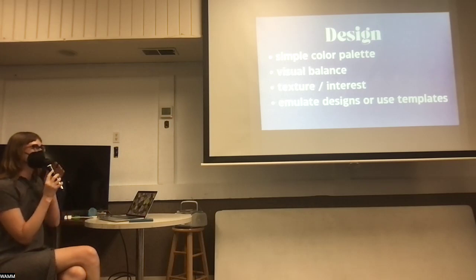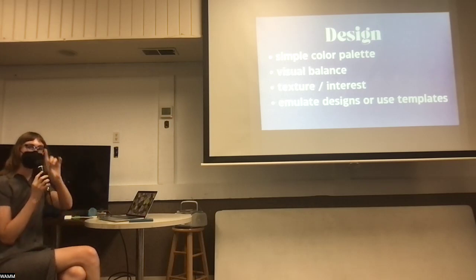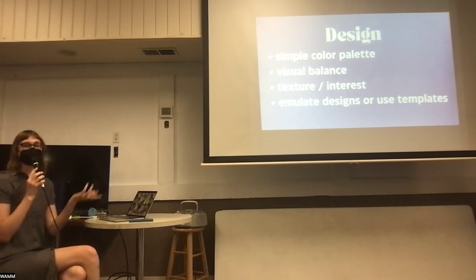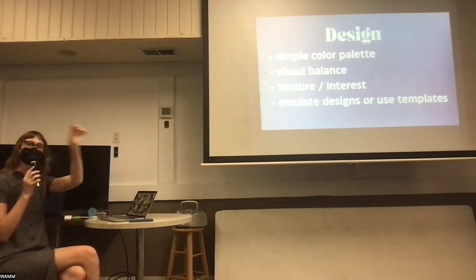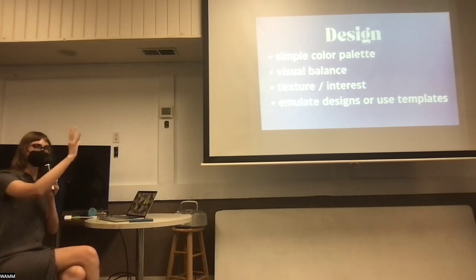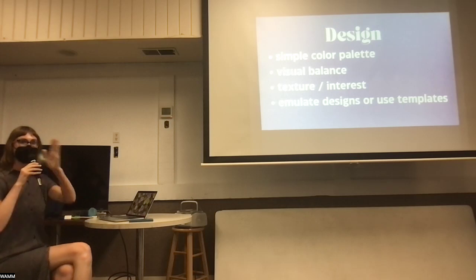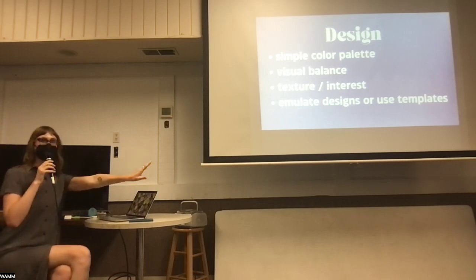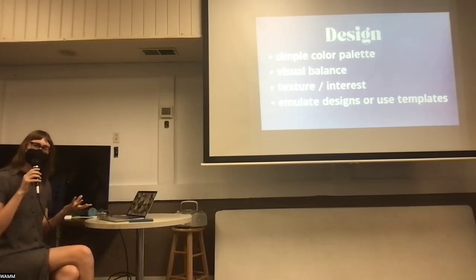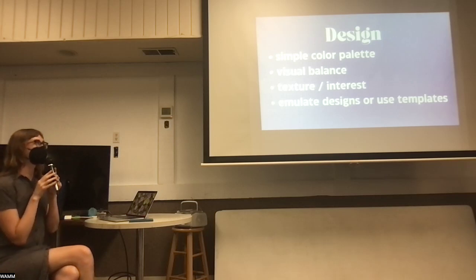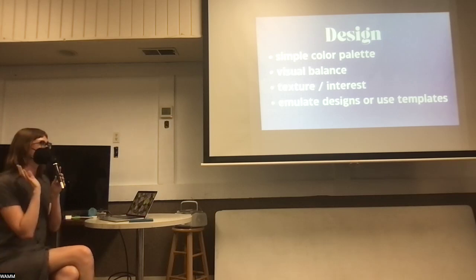Visual balance is the idea that you want to create shapes within your graphics. So if you have a square graphic because it's going on Instagram, you want the content inside the square to also make a square. If you've got a piece of text running up against one side and another image running up against the opposite side, it looks random. But if you can line things up so that they form a shape, it looks a lot more cohesive. I'll show some examples of that in a second.